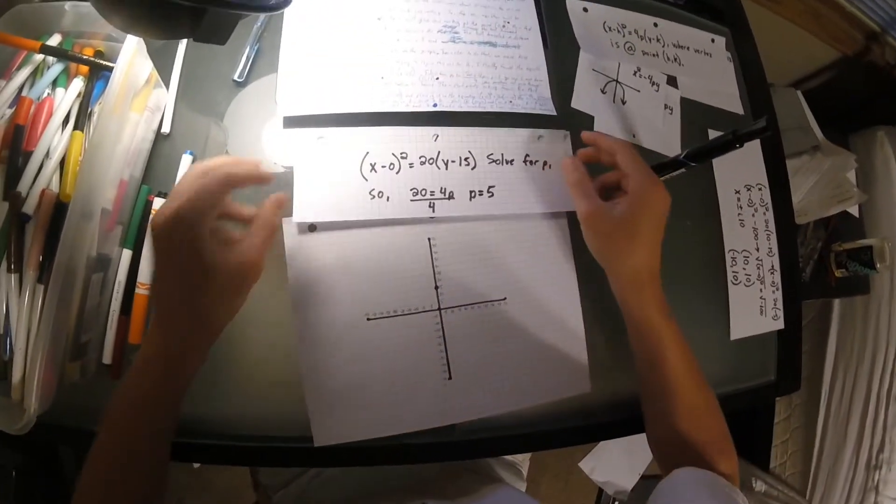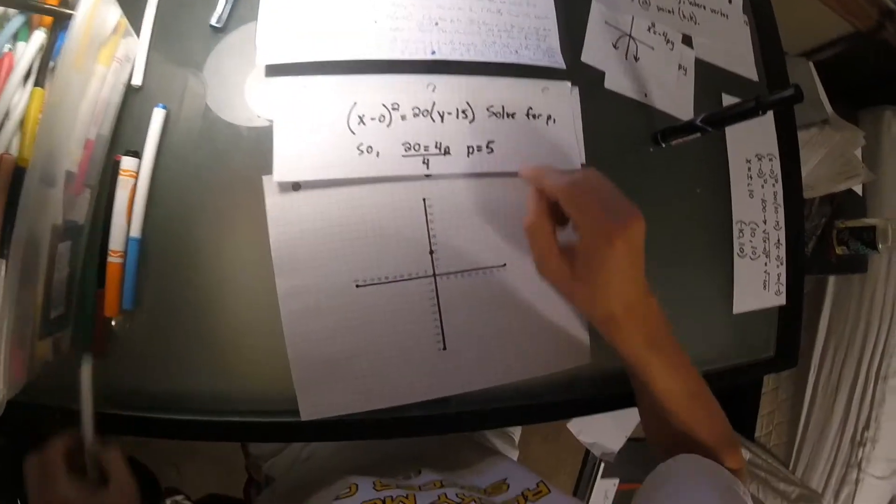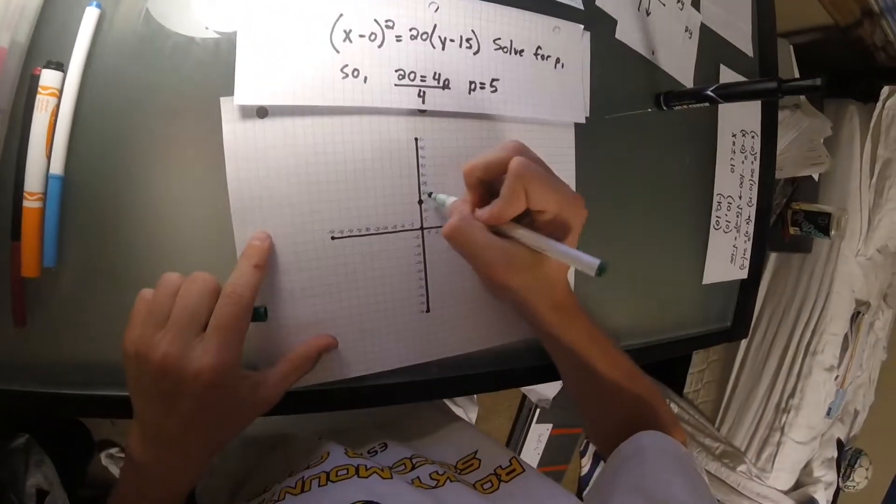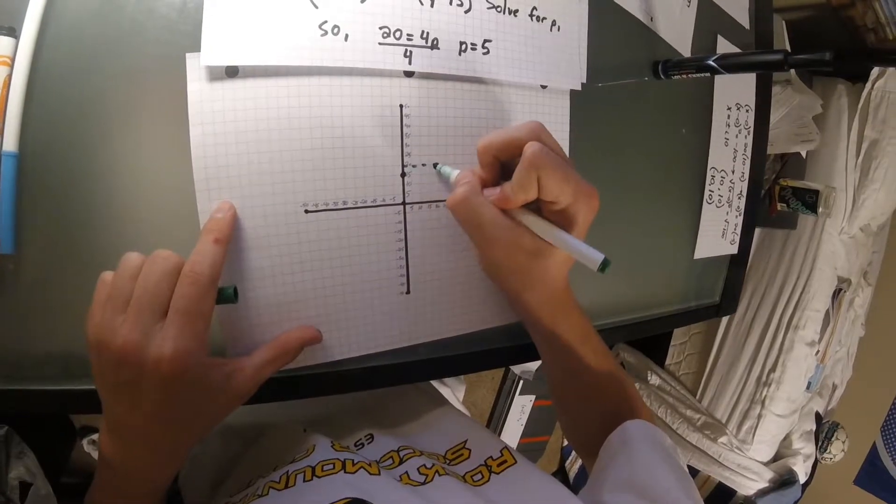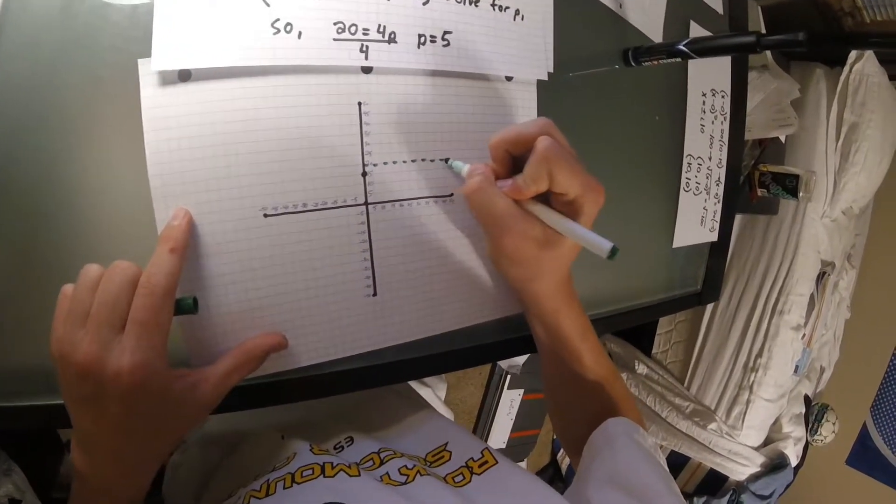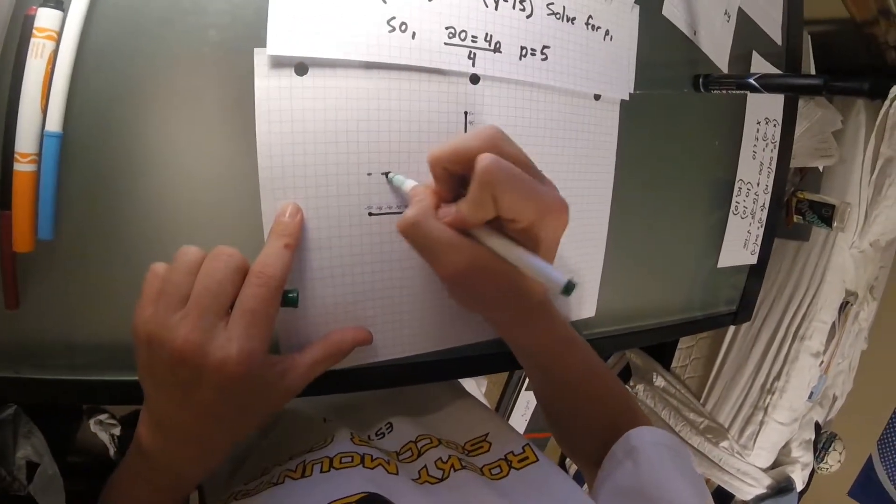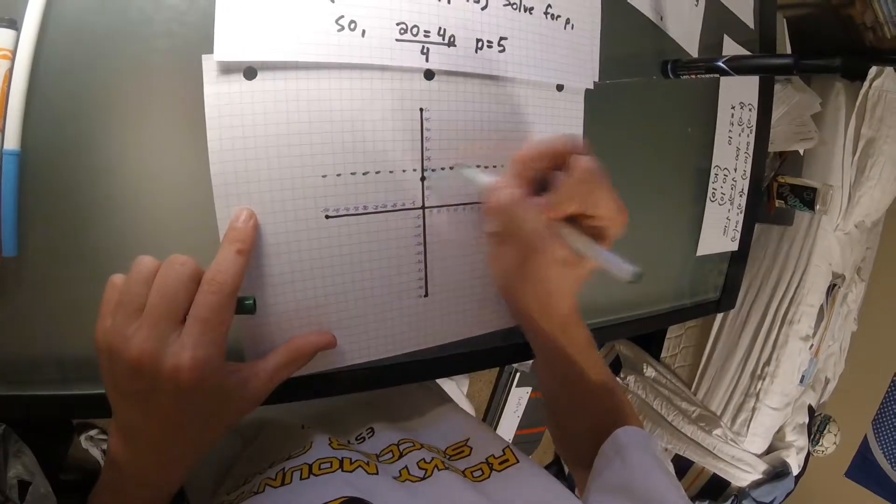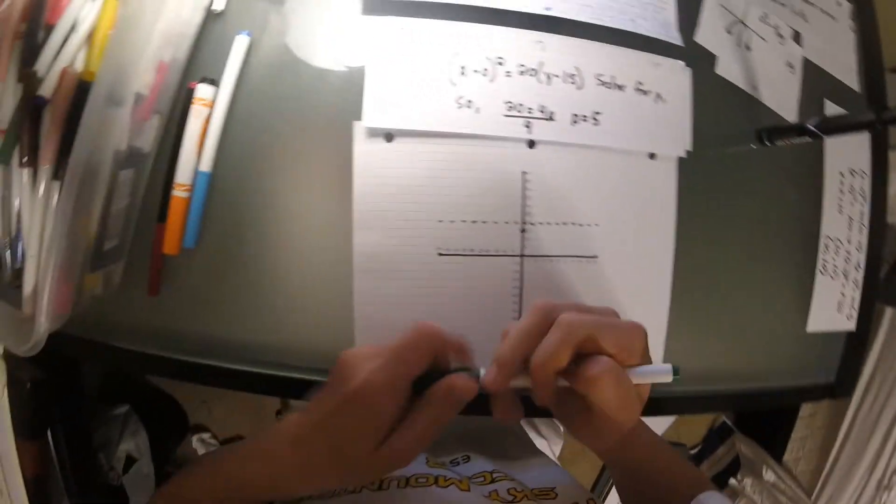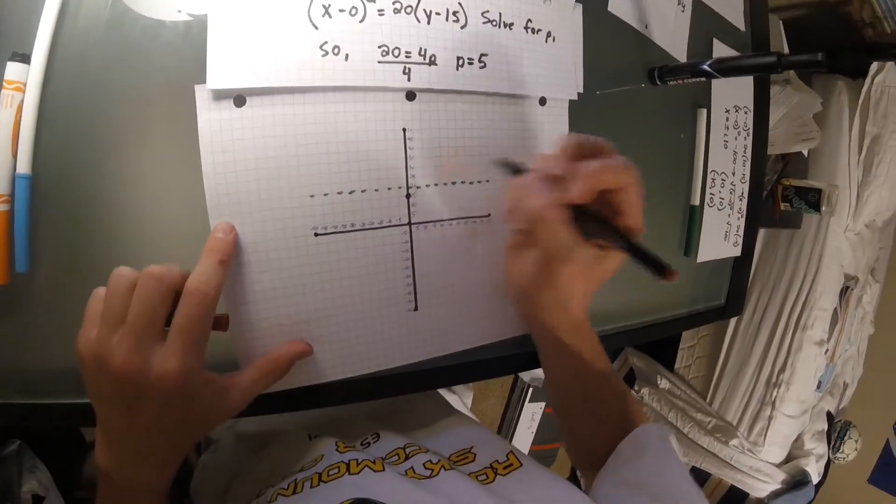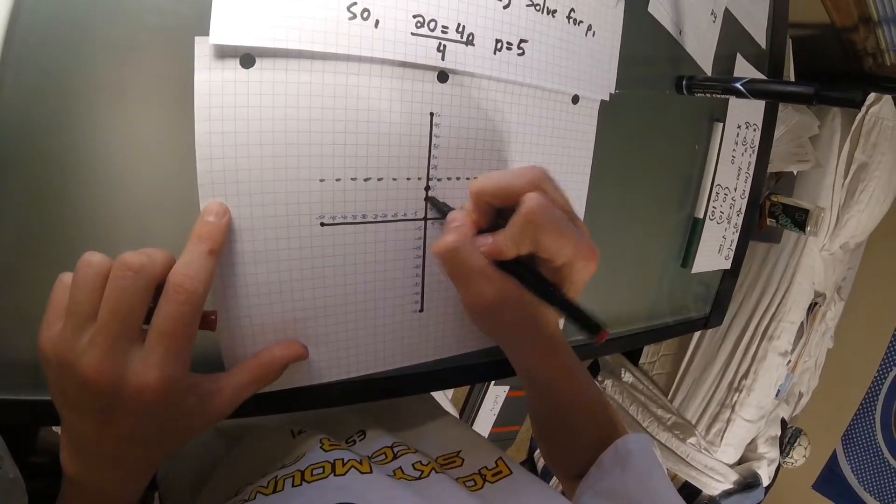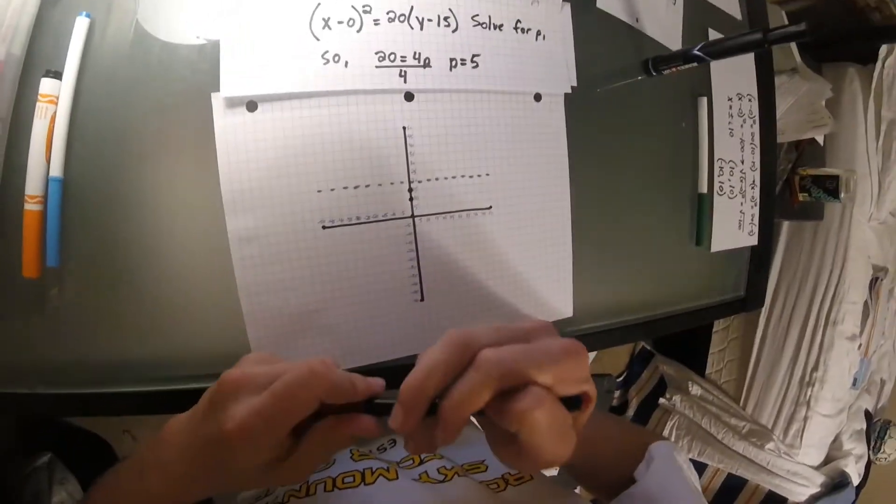So, to find our directrix, we are going to add 5 to our vertex, and that's going to give us 20. So, we're going to draw a dashed line to represent our directrix. And for our focus, we are going to subtract 5 from the vertex, which is going to give us a value of 0, 10.